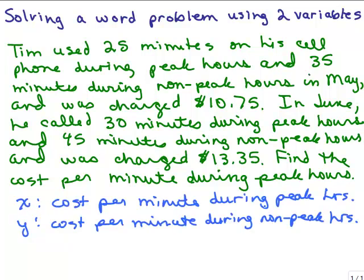Let's let X be the cost per minute during peak hours and Y be the cost per minute during non-peak hours. You could use any variable you want. You might have let P be the cost during peak and N be the cost per minute during non-peak. That's up to you. I went ahead and used X and Y.